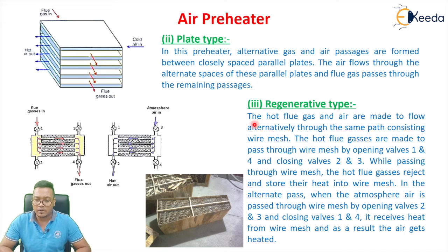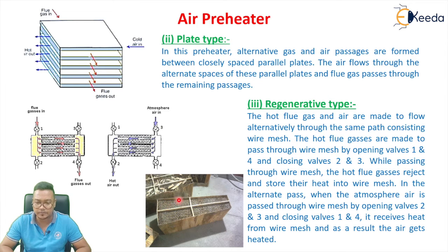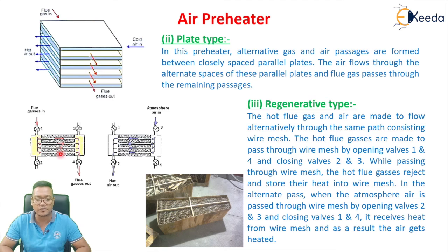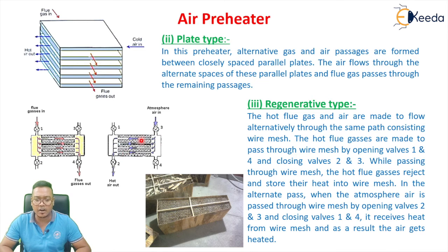In the regenerative type, the hot flue gas and air are made to flow alternatively through the same path consisting of a wire mesh or matrix. First, walls 2 and 3 are closed, and flue gas is passed from port 1 to port 4 — transferring heat to the wire mesh matrix. Then walls 1 and 4 are closed, and air flows from port 3 to port 2, recovering heat from the wire mesh. This is called the regenerative type air preheater.